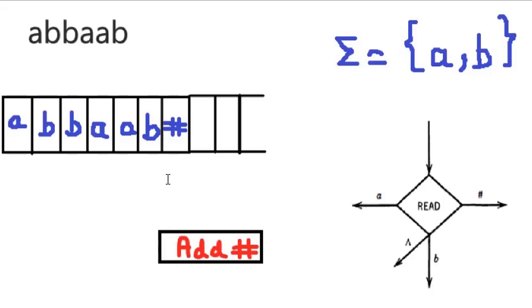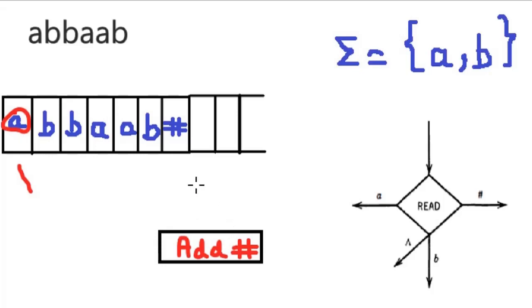The queue is first-in, first-out (FIFO) — whichever symbol enters the queue first will exit first. The leftmost character in the queue is read first. For example, if 'a' entered first, then when we read from the queue, character 'a' will be read first. And if we add something to the queue, it will be added on the right side.